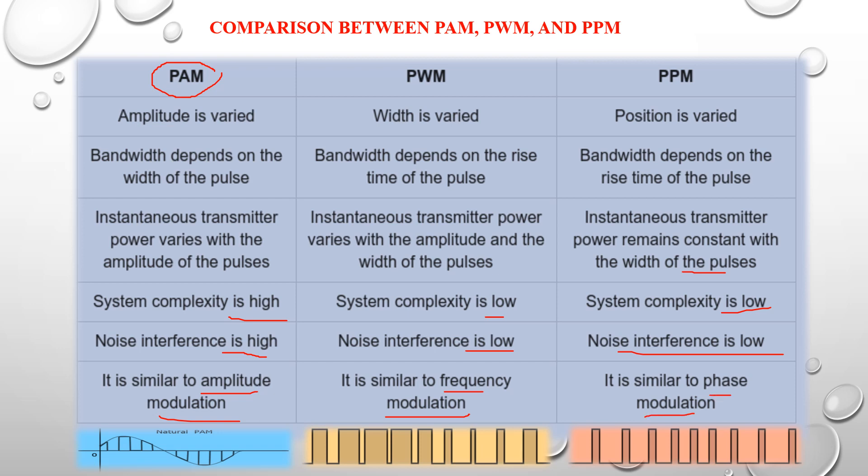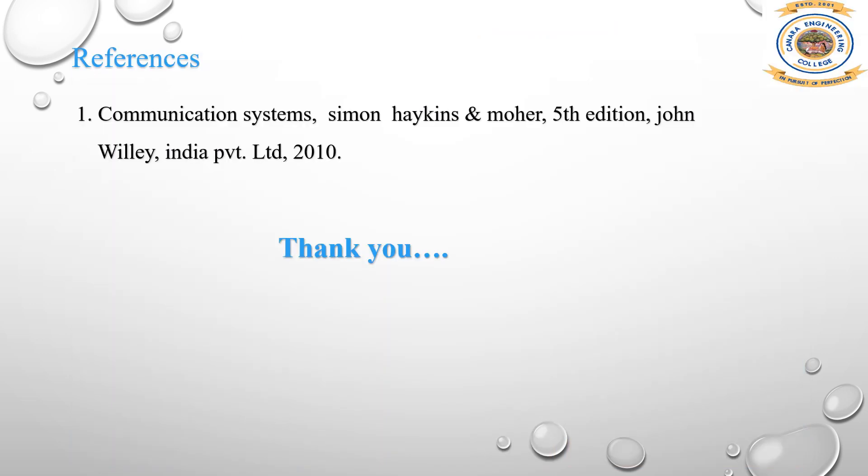PAM is similar to AM because amplitude varies with respect to the message signal. PWM is similar to FM because, just as FM has maximum and minimum frequency, PWM has maximum and minimum frequency signals. PPM is similar to phase modulation because the frequency varies with respect to phase. To generate a PPM signal, we first need to generate the pulse width. Thank you.